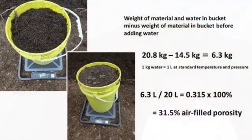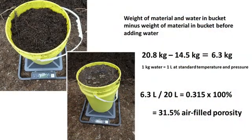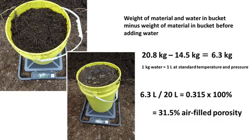Record the weight of the water and the compost in the bucket. Subtract the weight of the bucket plus compost from the final weight, which is the weight of the bucket plus the compost plus the water. This number is then divided by 20, as there are 20 liters of compost in the bucket. The resulting fraction represents air-filled porosity.